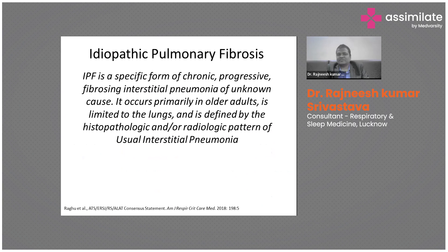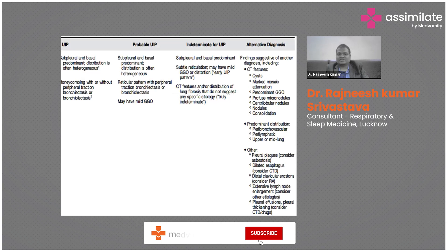Idiopathic pulmonary fibrosis is the most important subtype of ILD. It is important to know whether the patient has IPF or anything else, because IPF carries the worst prognosis of all ILDs. IPF is a specific form of chronic progressive fibrosing interstitial pneumonia of unknown cause. It occurs primarily in older adults, usually more than 50 to 60 years, is limited to the lungs, and is defined by the histological or radiological pattern of UIP.